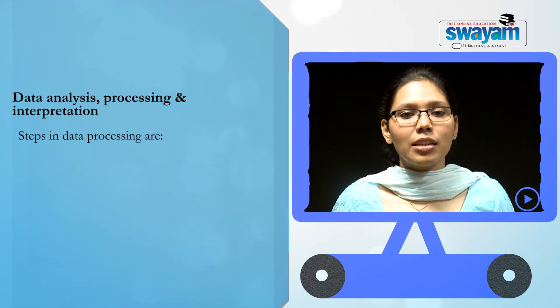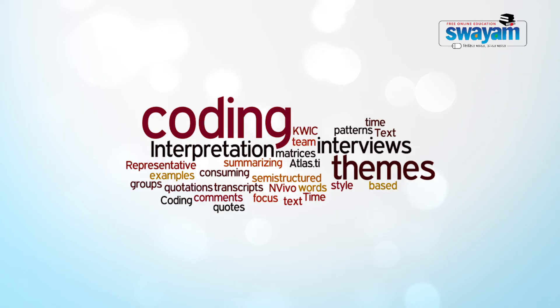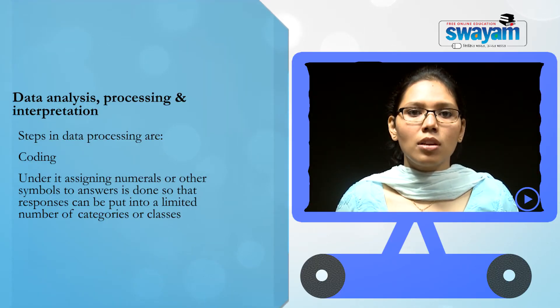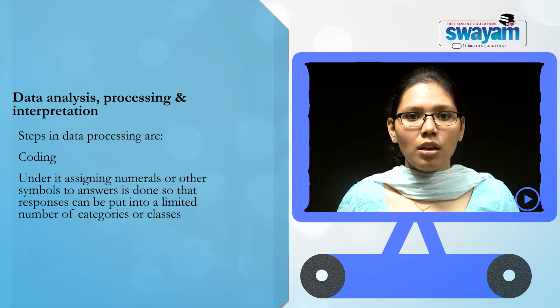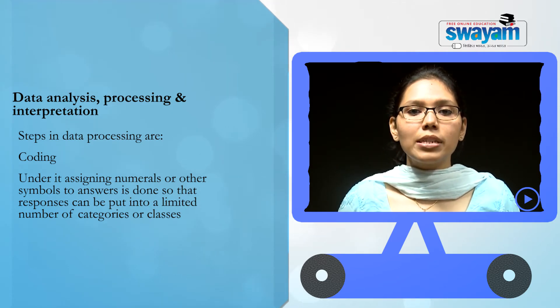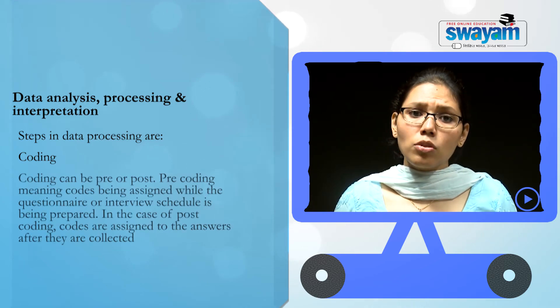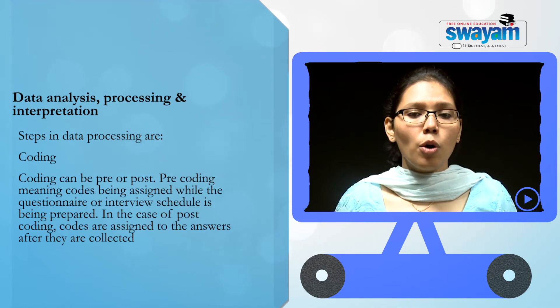The second step under data processing is coding. Under it, assign numerals or other symbols to the answers so that responses can be put into a limited number of categories or classes. Now, this coding can be pre or post.